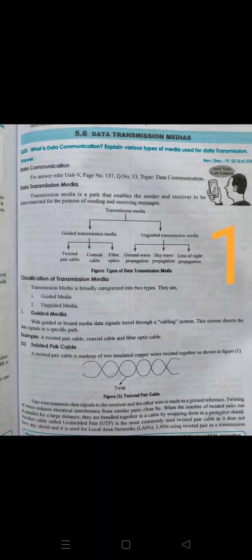When a number of twisted pairs run in parallel over a larger distance, they are bundled together in a cable wrapped in a protective shield. Unshielded twisted pair, or UTP, is the most commonly used twisted pair cable. It does not have any shield and is mainly used in local area networks. Data rates depend on the thickness of the wire and the distance traveled. Categories 3 and 5 support data rates ranging from 10 Mbps up to 100 Mbps.